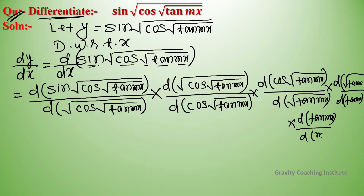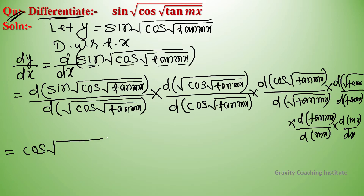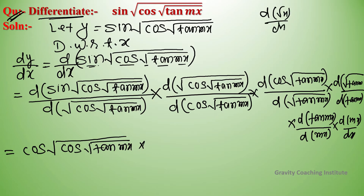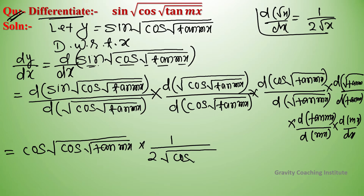Finally, sine's differentiation gives cos, so cos(√(tan(mx))) as the angle. Then applying the root differentiation rule — root x differentiates to 1 upon 2√x — we get 1 upon 2 into √(cos(√(tan(mx)))).